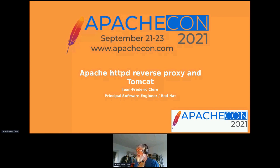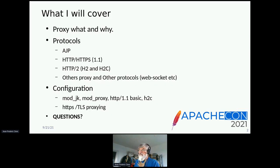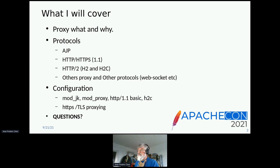I'm going to speak about reverse proxy in HTTPD and Tomcat. I will explain why we need a proxy, I will go through the different protocols: AJP, HTTP 1.1, HTTP 2, and some other proxy stuff. I will show some configuration and I will make a short demo, insisting about the HTTPS and TLS proxy.